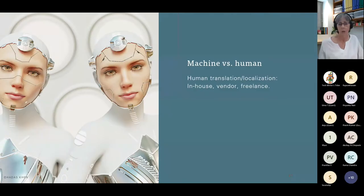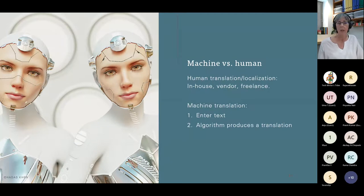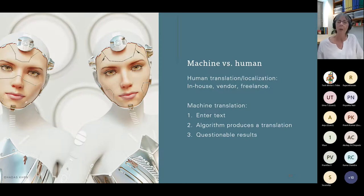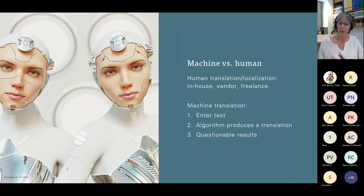Before we continue, I want to mention machine versus human translation. Human translation can be in-house, vendor, or freelance. Machine translation is where we enter text, an algorithm produces a translation, and the results can be questionable. You can only truly judge the outcome if you understand the language it's been translated into. In general, machine translation doesn't handle sentences, sayings, or homonyms very well. To prove this point, I have a few examples.